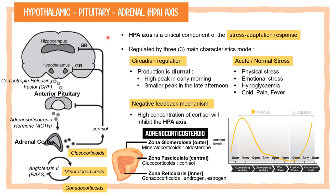The production of cortisol occurs through circadian regulation, meaning it is diurnal. As you can see in this picture, cortisol production peaks in the early morning and has another smaller peak in the late afternoon.